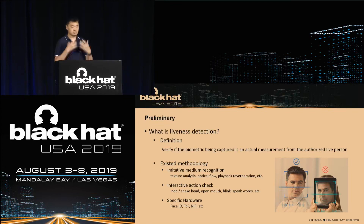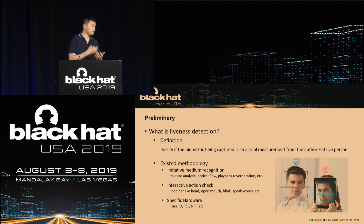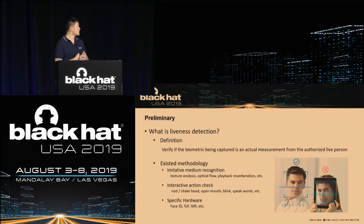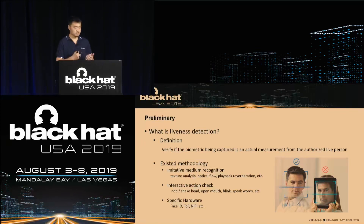What is liveness detection? Liveness detection tries to identify if you are a live person, not a forged identity being used to unlock the phone. There are many methods: sensors can distinguish skin texture from a photo, or perform optical flow analysis. There are also interactive action checks — commands displayed on screen asking you to nod, shake your head, or open your mouth. In iPhones and some smartphones, specific hardware handles this liveness detection.